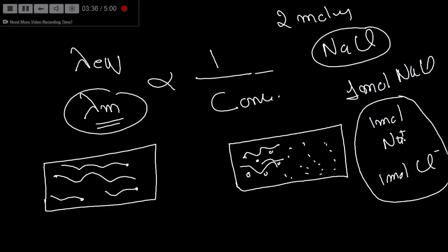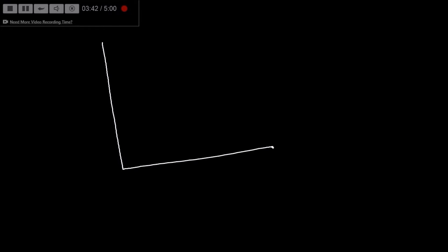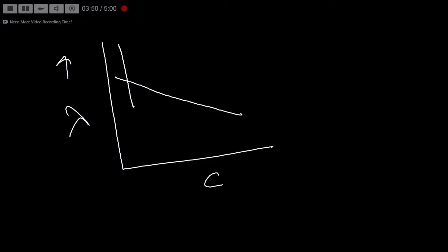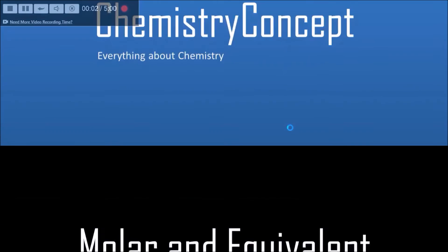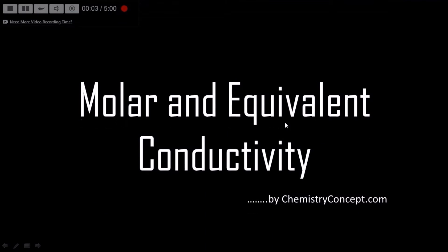If we make a plot between concentration and molar or equivalent conductivity, for a strong electrolyte it shows a sharp decrease, while for a weak electrolyte the curve is steeper.